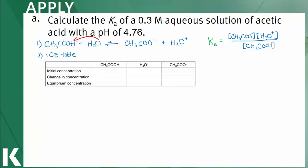Next, let's set up an ICE table and fill it in. The initial concentration of acetic acid is 0.3 M as given. It will be 0 for the hydronium ion and the acetate anion. The change will be −x for acetic acid and +x for both hydronium ion and the acetate anion, since for every molecule of acetic acid you dissociate, you form one molecule of hydronium and one molecule of acetate. The equilibrium concentration will be 0.3 − x, and +x for both hydronium and acetate.